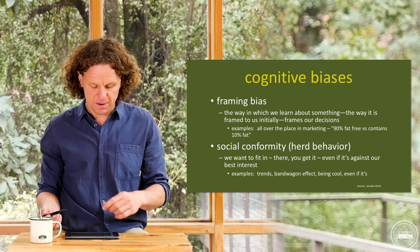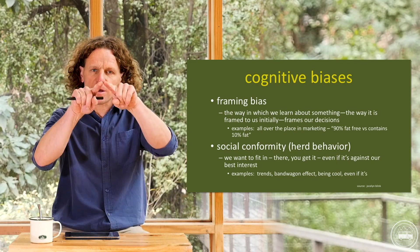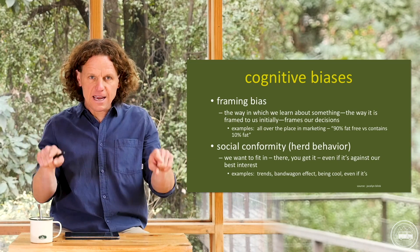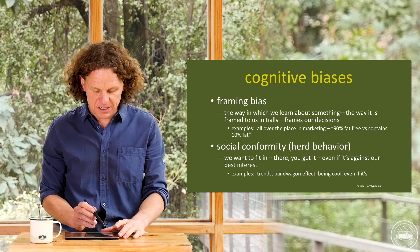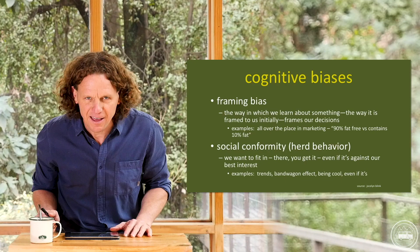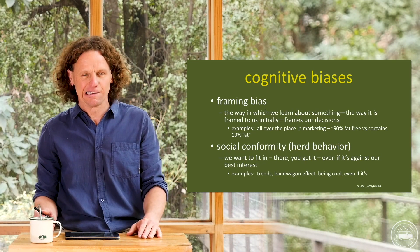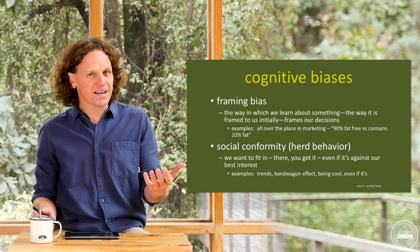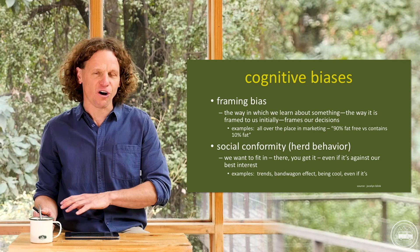Framing bias — think about a picture frame: the frame sets the standard upon which we make decisions. Framing bias is the way in which we learn about something; the way it is initially framed to us impacts our final decisions. A great example seen all over marketing: if a product says '90% fat free,' you think that sounds pretty good. But if you flip it around — '10% fat' — you might feel differently. Yet the information is identical. We get framed all the time when it comes to decision-making.